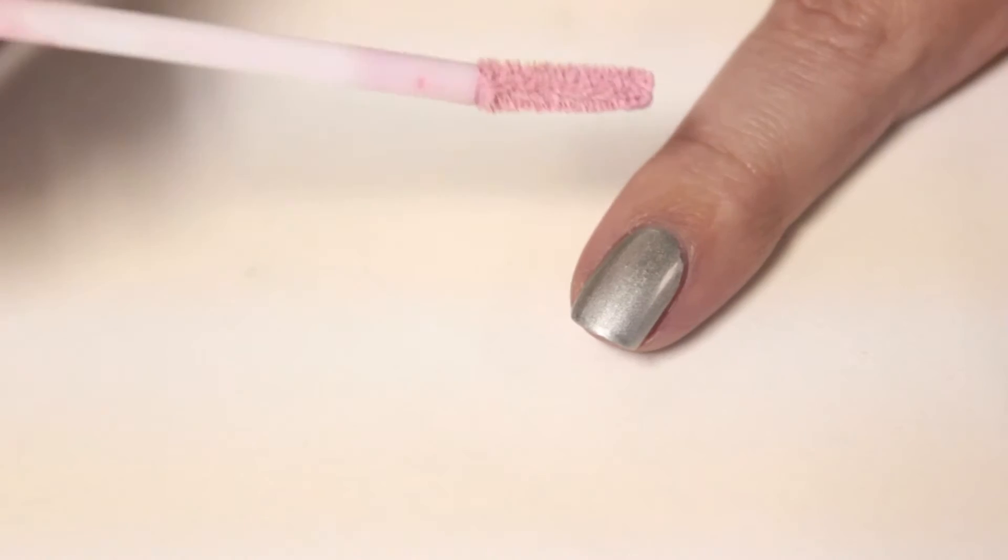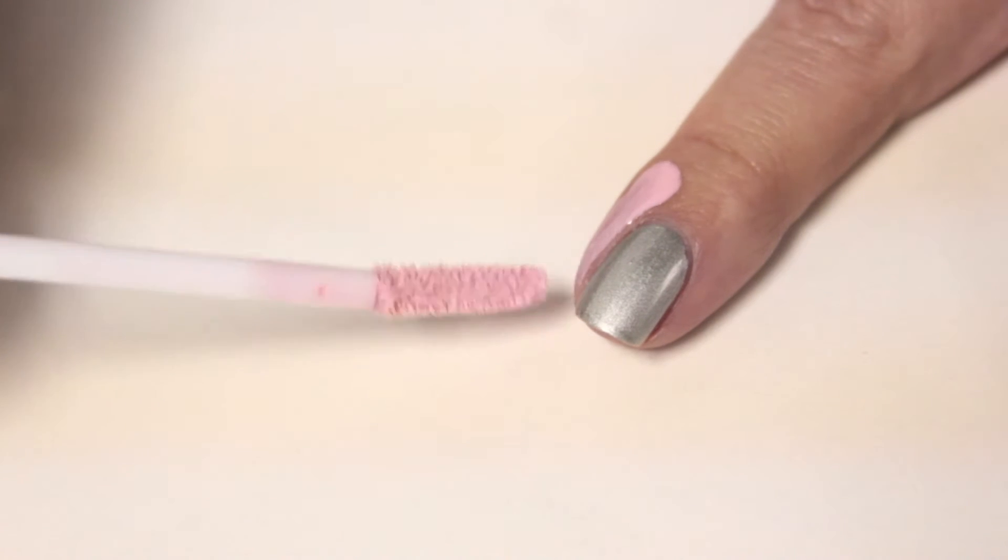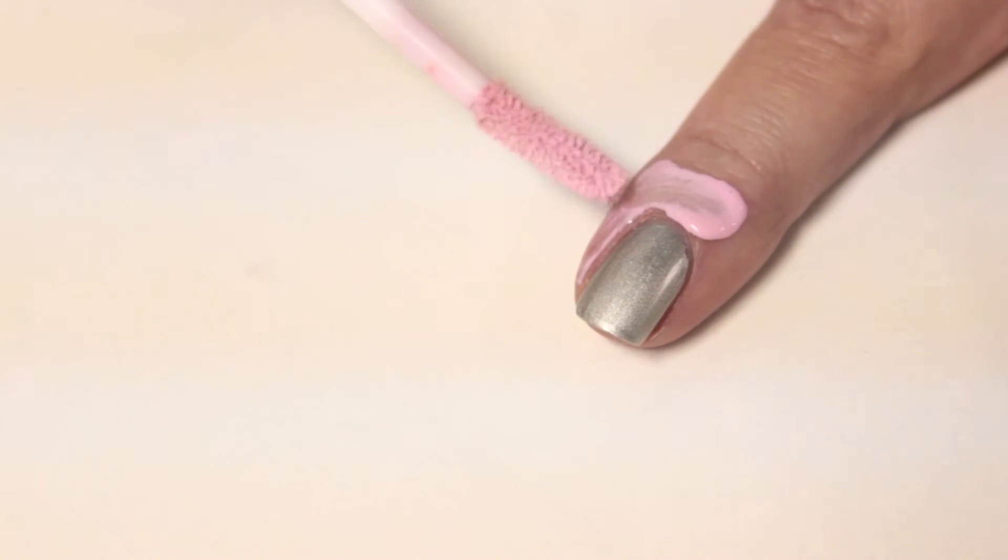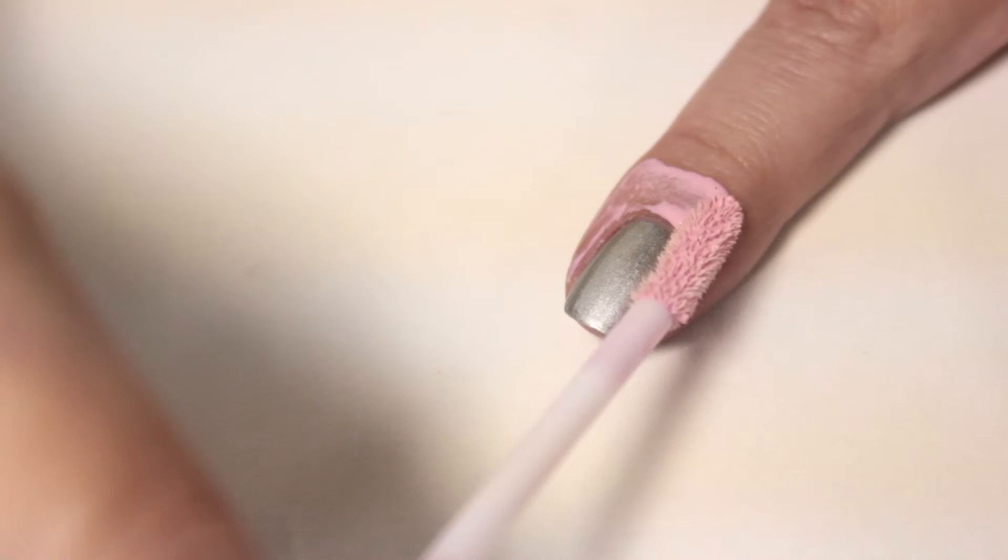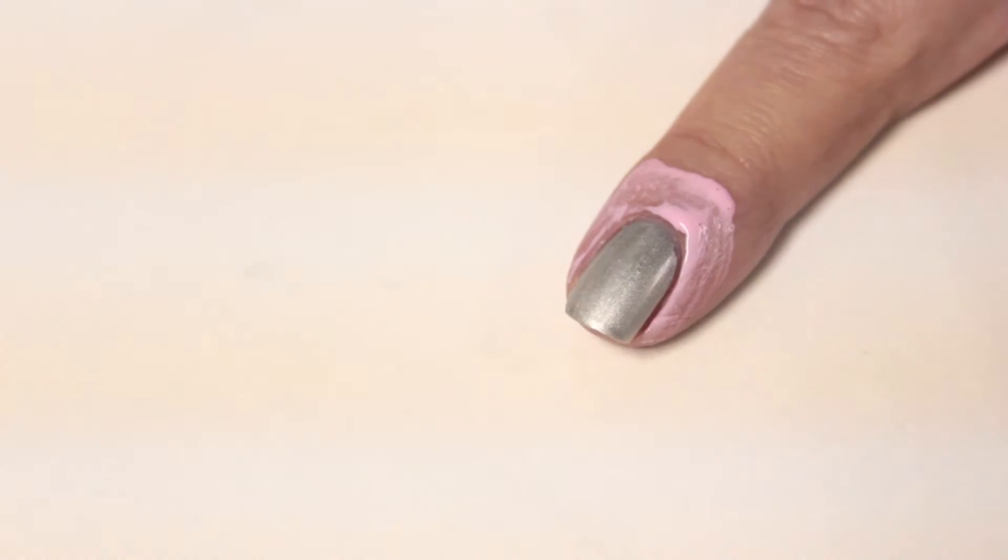Now use liquid tape around your nail. Next, use some of Del Sol's December nail polish of the month and paint it on the corner of a makeup sponge, then use the makeup sponge to put the glitter on your nail.